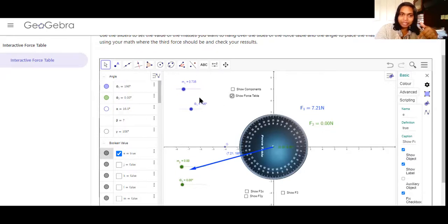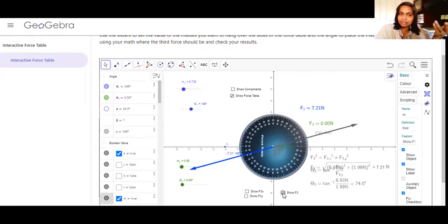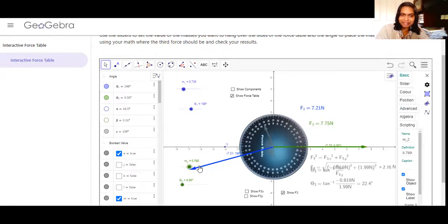Then later on, when you are ready to check your answers, but please do your calculations first, then you may check. Please follow the instructions on the manual in order. Otherwise, you will get messed up with what you're doing. Later on, the lab manual will ask you to check, show F3, so that will show you the resultant value. I didn't add any mass to here, so let me add some.